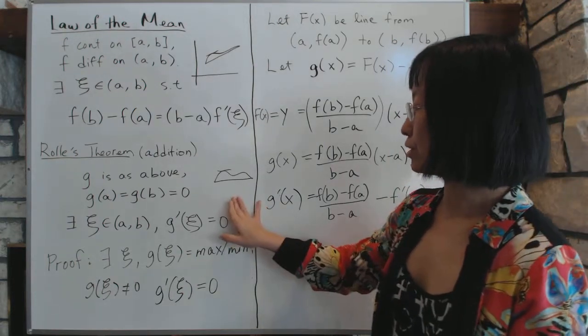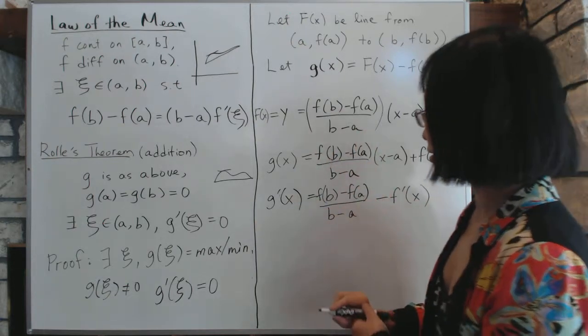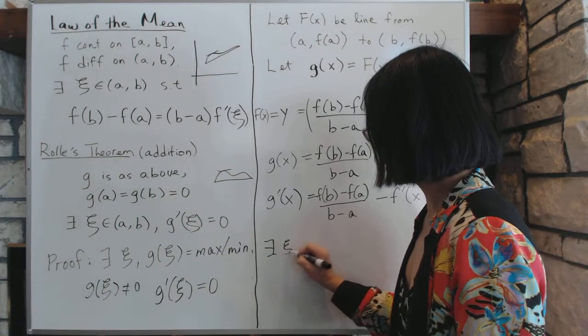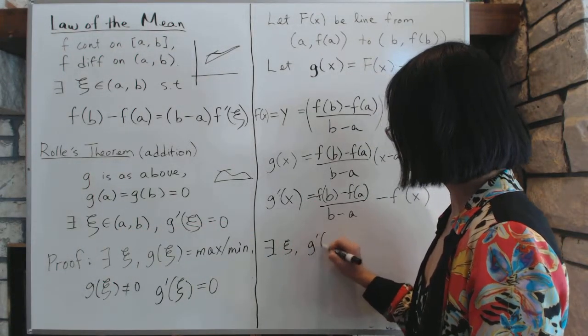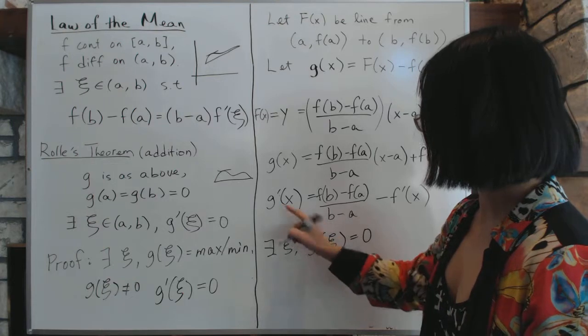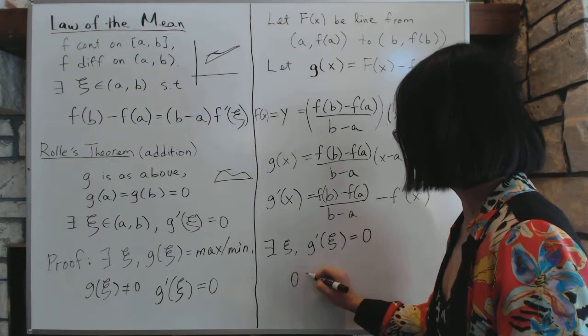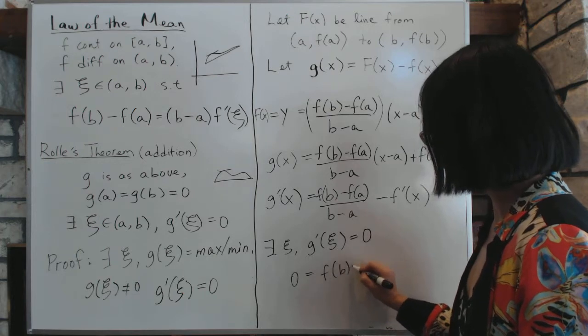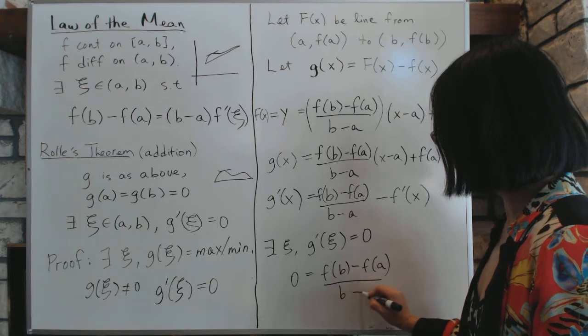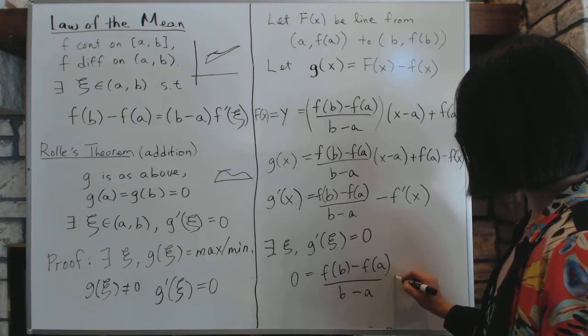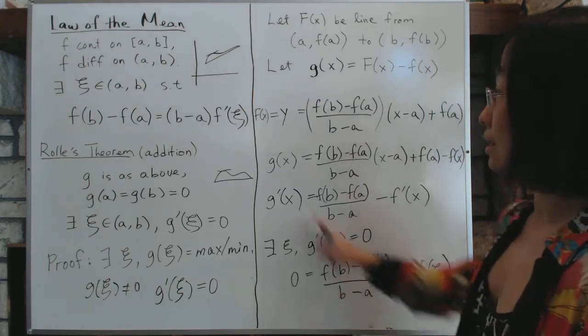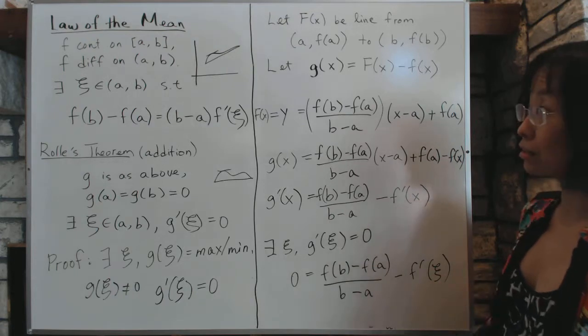Now we will use Rolle's theorem, which states that if all this stuff is true, then there exists, by Rolle's theorem, there exists a ξ right there, where g'(ξ) = 0. We're stuck around. So then, in other words, 0 = [f(b)-f(a)]/(b-a) - f'(ξ). And that is exactly the same equation as this. And that concludes our proof.